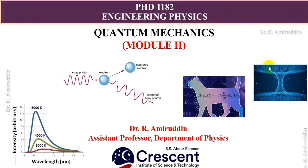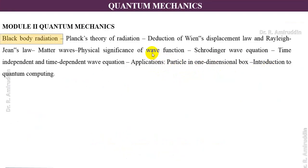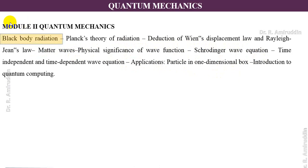Welcome. The topic we are going to discuss is quantum mechanics, module 2, PhD 1182 Engineering Physics. The syllabus of this course starts with perfect blackbody radiation, from which we will derive Planck's theory of radiation. We will then reduce Wien's displacement law and Rayleigh-Jeans law, and then enter into the Schrödinger wave equation — time dependent and time independent — and apply it to a particle in a box.